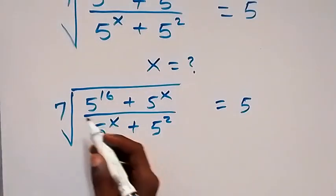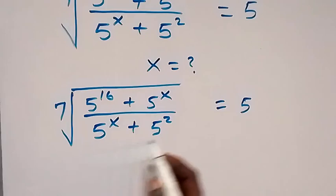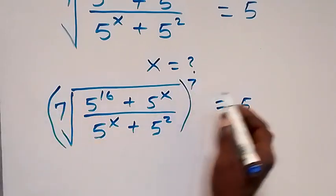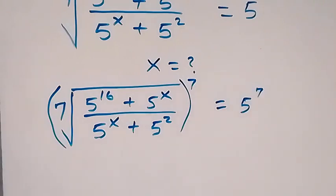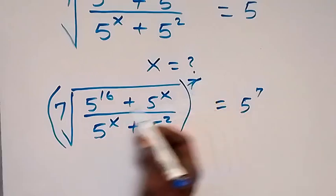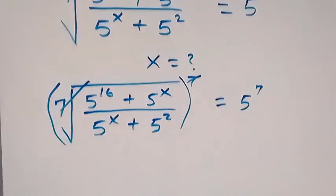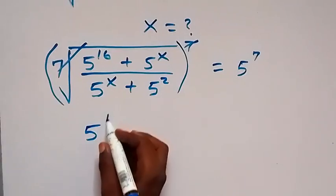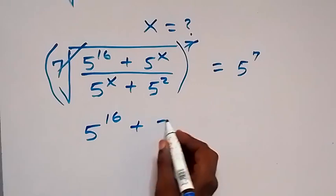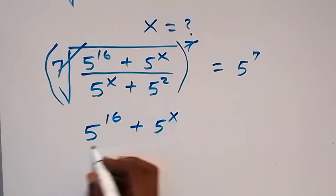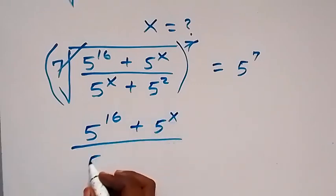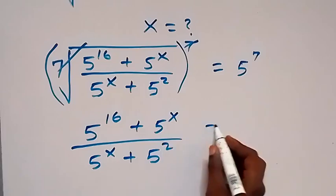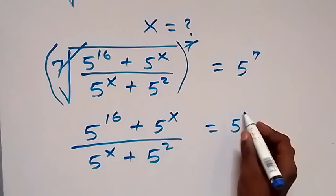We can remove the 7th root by raising both sides to power 7, so that the power 7 cancels the 7th root. What we have now is 5 raised to power 16 plus 5 raised to power x, all over 5 raised to power x plus 5 squared, equals 5 raised to power 7.